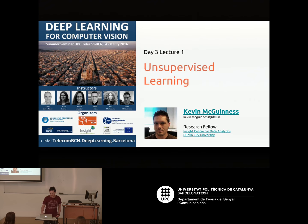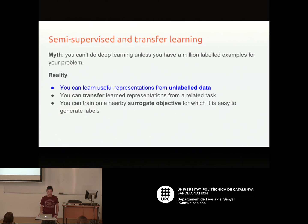This talk is going to be about unsupervised learning and deep networks. There's a myth that you can't do deep learning unless you have a million labelled examples, but in reality you can learn useful representations from unlabeled data — and that's what we're going to talk about today.